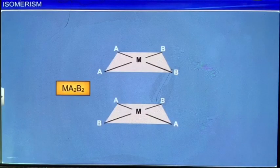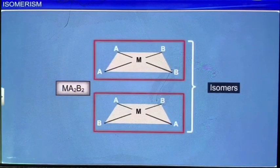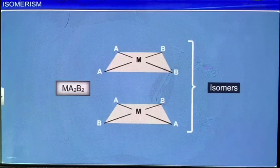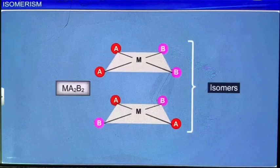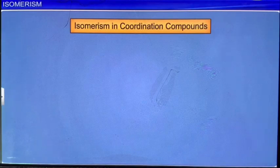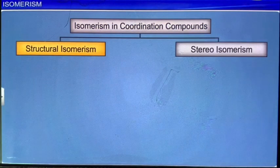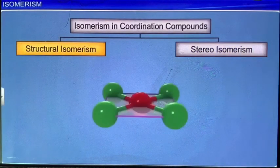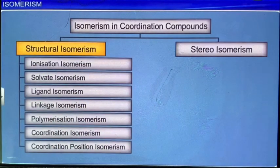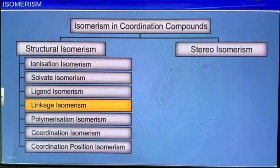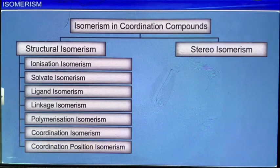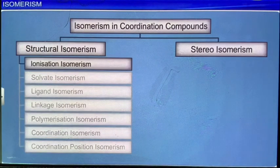Two or more compounds with the same chemical formula but different structural arrangements are called isomers. The phenomenon is known as isomerism. Isomers differ in one or more physical or chemical properties because of the difference in the arrangement of the atoms. Isomerism in coordination compounds may be broadly divided into two types: structural isomerism and stereoisomerism. Structural isomerism arises due to the presence of different kinds of bonds between the metal and the ligands. It can be further subdivided into ionization isomerism, solvate isomerism, ligand isomerism, linkage isomerism, polymerization isomerism, coordination isomerism, and coordination position isomerism. We will discuss ionization isomerism, solvate isomerism, linkage isomerism, and coordination isomerism in this module.